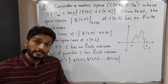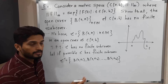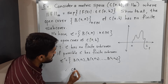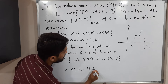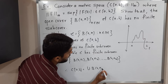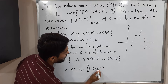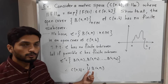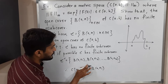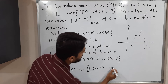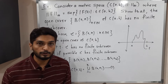Since script C-dash is a sub-cover, it is also a cover of C[A,B]. Therefore we can write: C[A,B] = union of B(0, Nᵢ) for i running from 1 to K. Let us call this equation number 1.